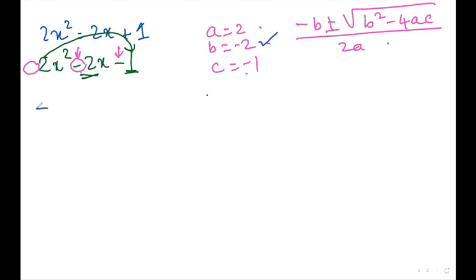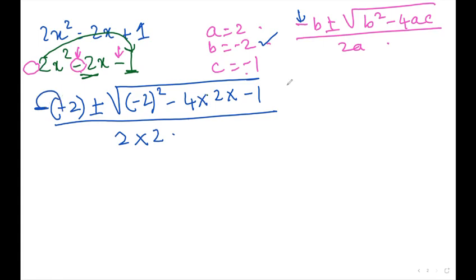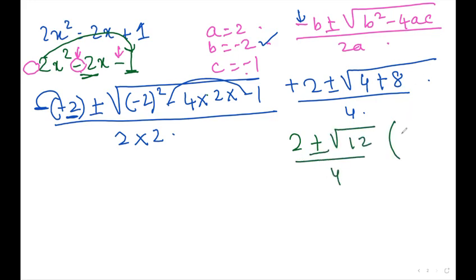Replacing in the formula: negative b — first I write the negative sign because b is negative 2, so negative of negative 2 is positive 2 — plus or minus the square root of b squared minus 4 into 2 into c, over 2 into 2. This becomes positive 2 plus or minus the square root of 4 minus minus 8, over 4, which gives 2 plus or minus the square root of 12, over 4.